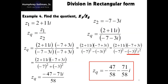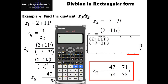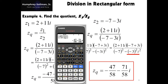We just need to enter the complex numbers that we need to divide: the quantity 2 plus 11i, over the quantity negative 7 minus 3i. Then press the equals key to see the answer: negative 47 over 58, minus 71 over 58 i.